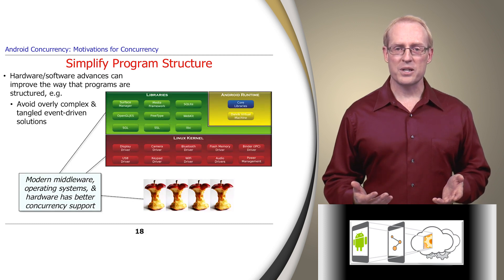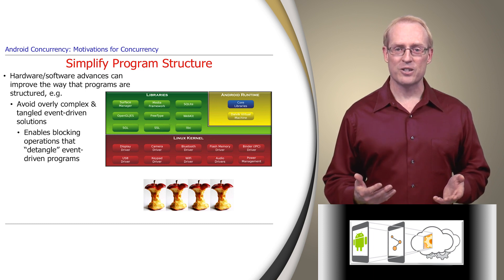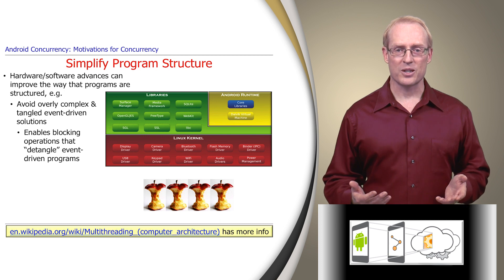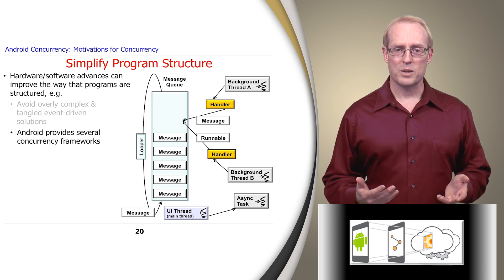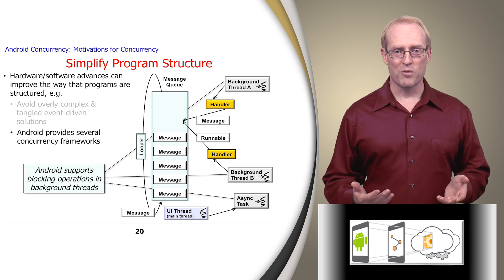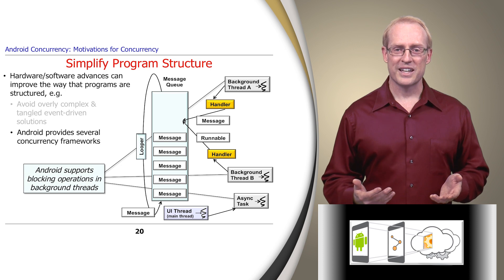Now that modern middleware, operating systems, and hardware have better concurrency support, more effective ways of structuring application and system software have emerged based on multi-threading, which enables blocking operations that detangle event-driven programs, as described at this link. For example, Android provides several concurrency frameworks that enable multiple threads to perform long-running computations in the background, which maps efficiently onto multiple cores. Moreover, these background computations can block independently of each other and the user interface thread, which allows developers to structure their software more cohesively. Using these Android frameworks effectively requires knowledge of concurrency patterns, which are described at this link.